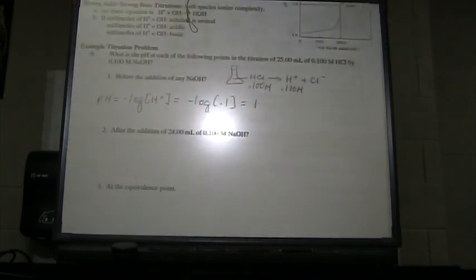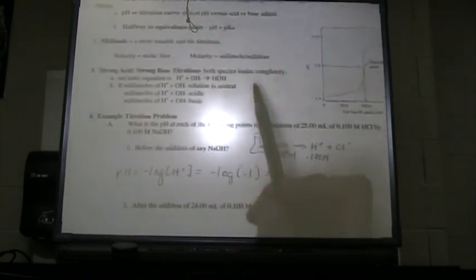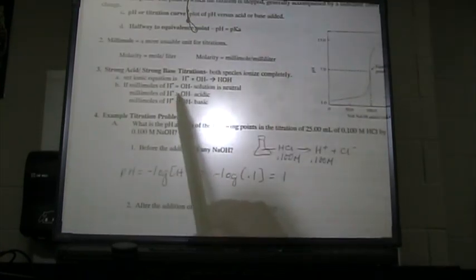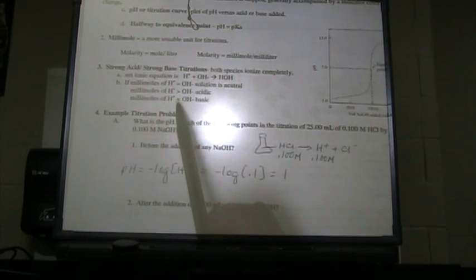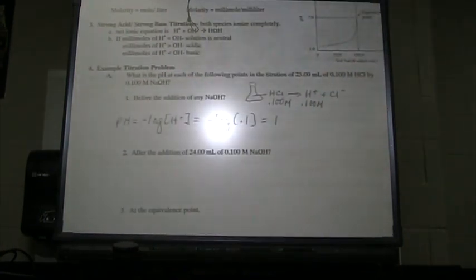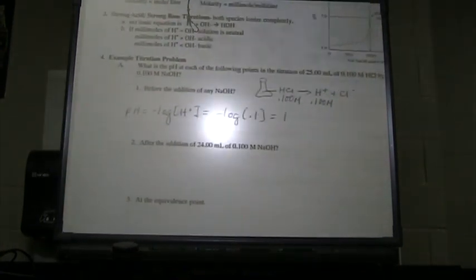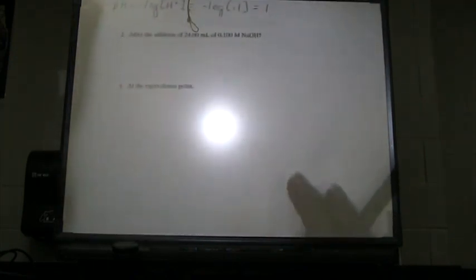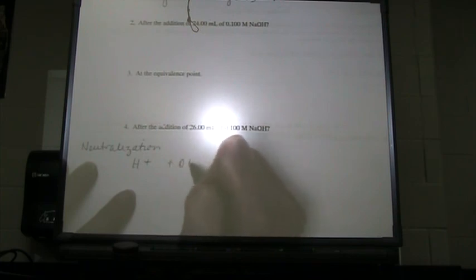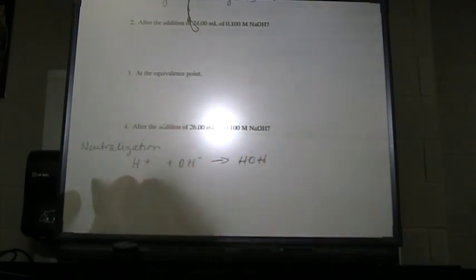Okay. Now let's look. We have now covered when it was acidic, when it's neutral. Now we need to look at when it was basic. So we've added 26 milliliters of the NaOH. We're still working with our same neutralization stoichiometry equation, and that's the hydrogen ion plus the hydroxide ion makes water.